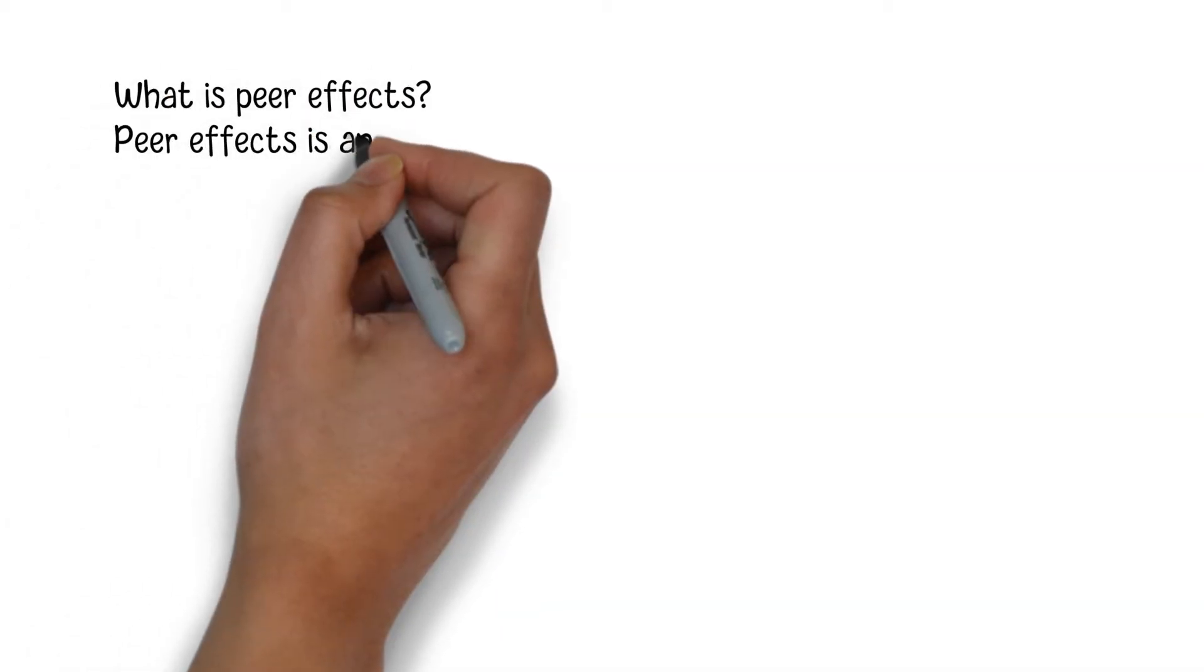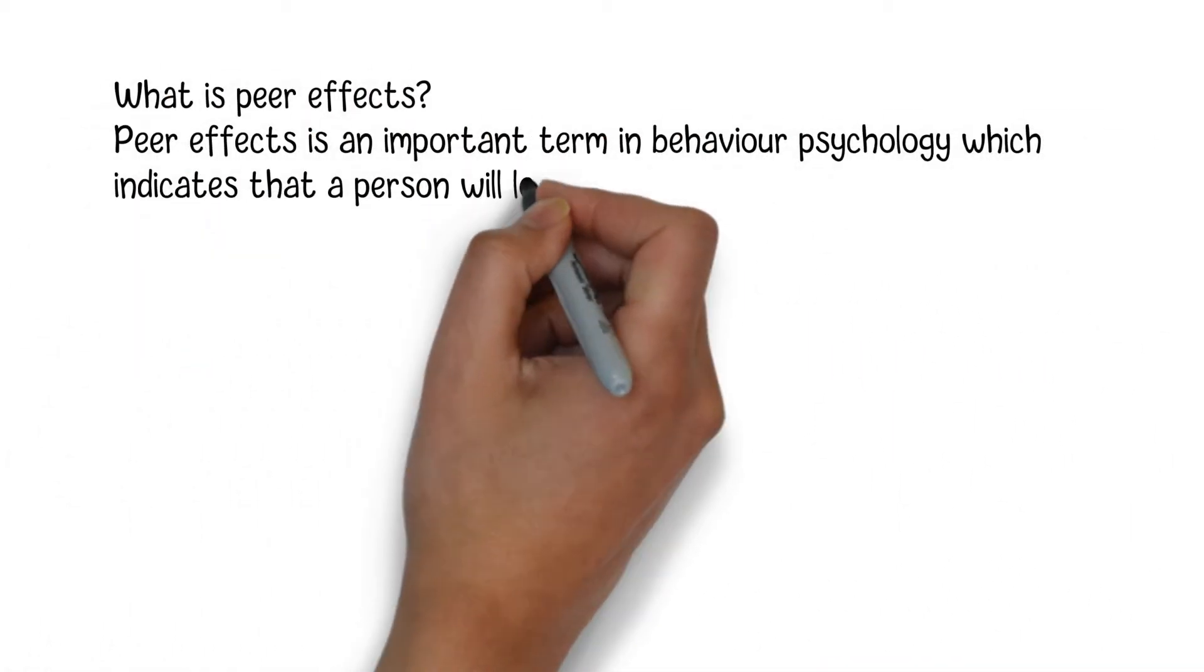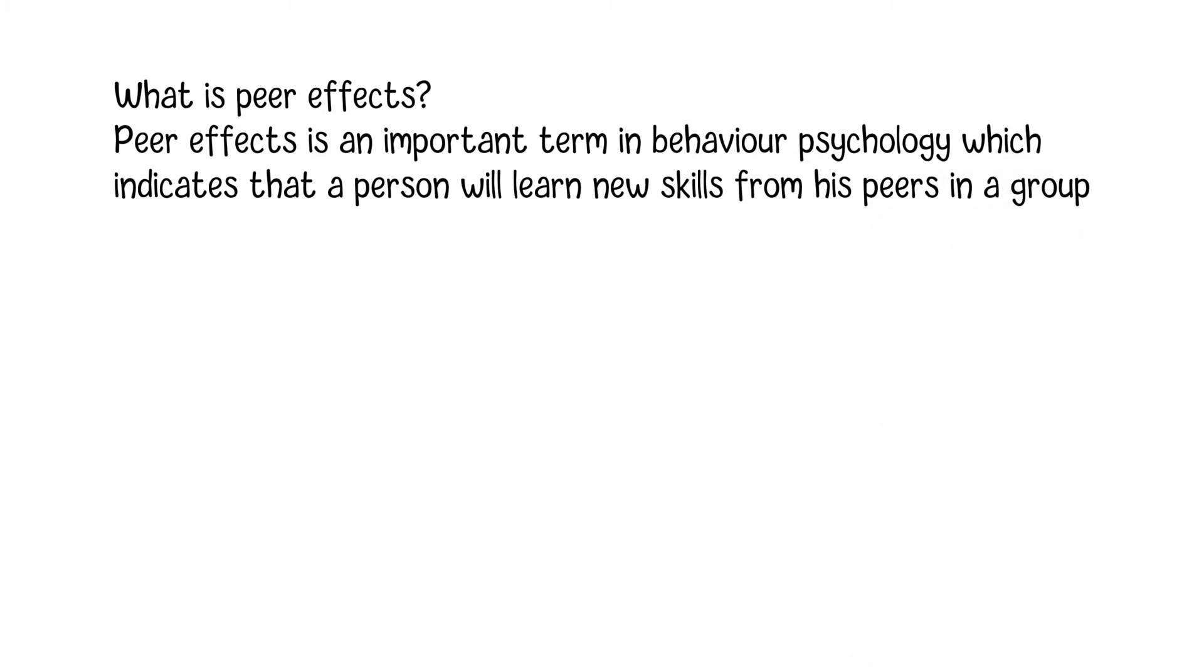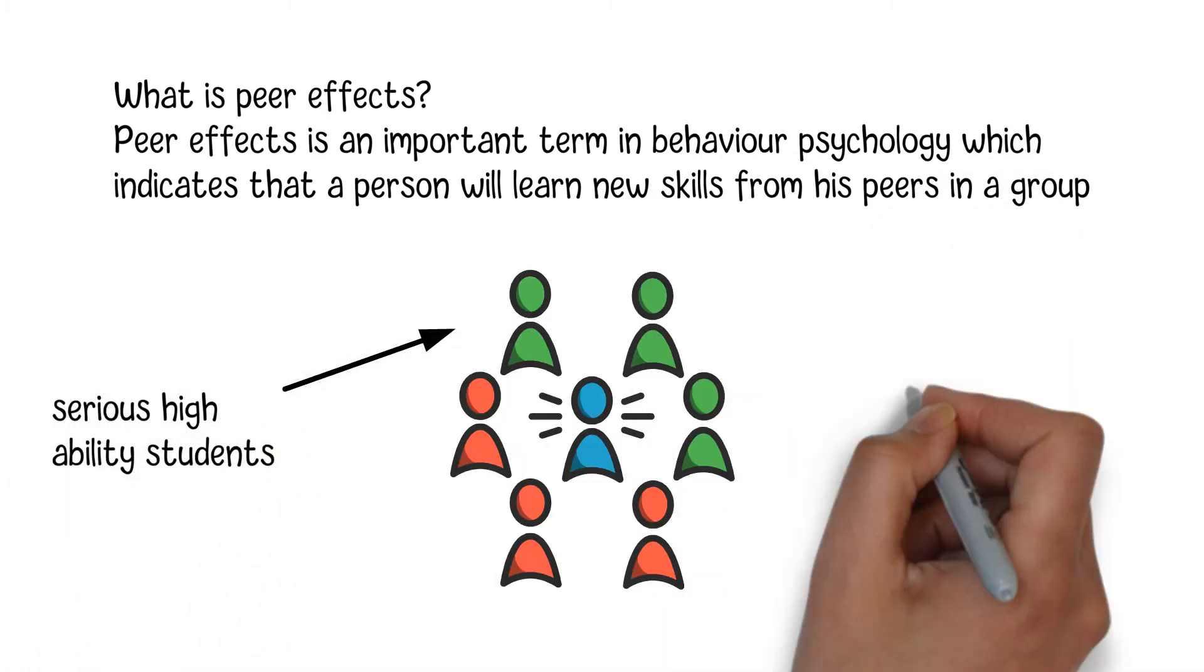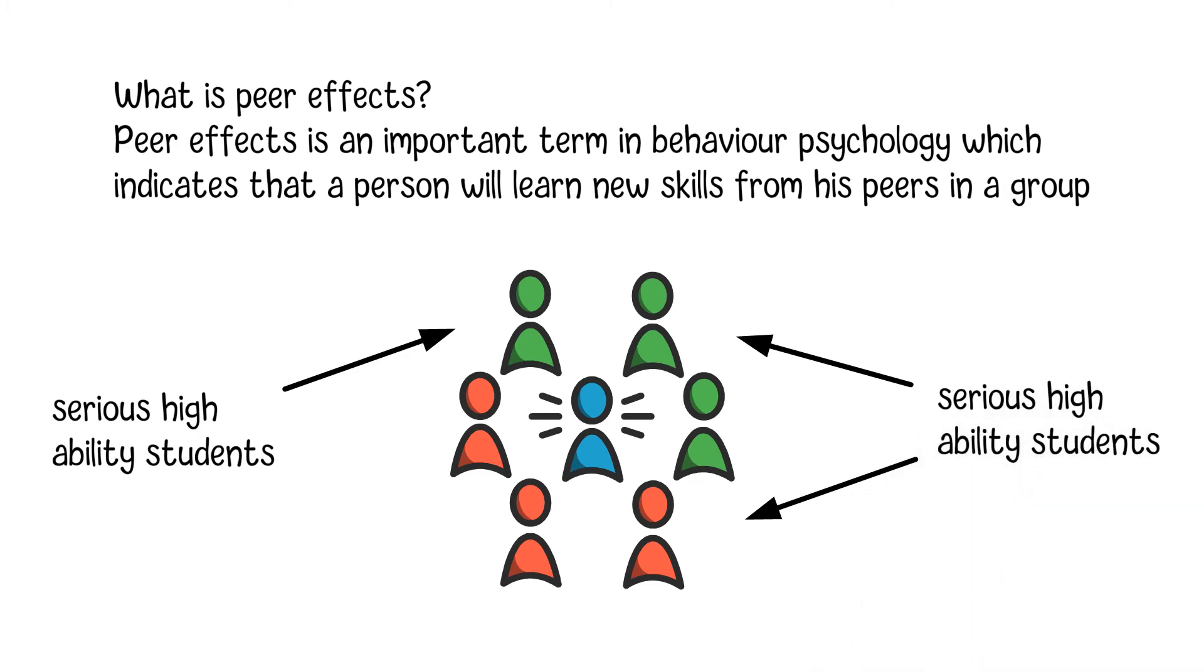Peer effects is an important term in behavior psychology which indicates that a person will learn new skills from his peers in a group. For example, in a high school or college, if a student is surrounded by serious high-ability students who are focusing on their academic performance, he will be more likely to take his studies seriously as well.